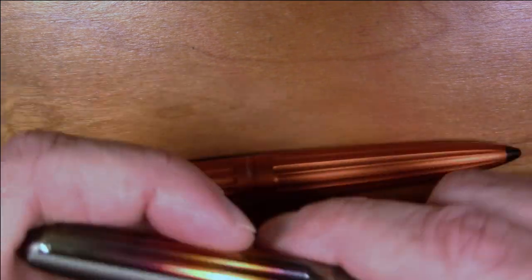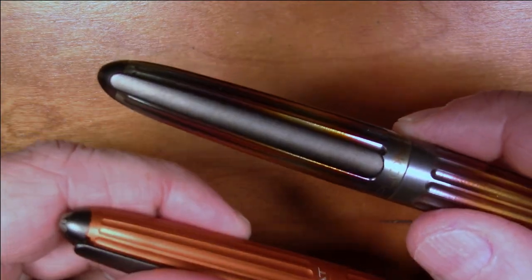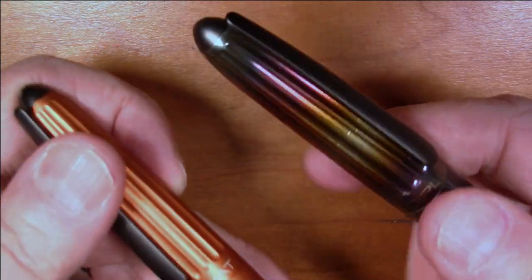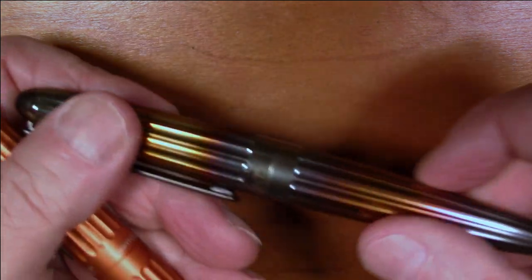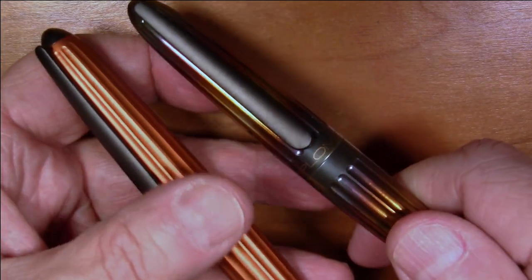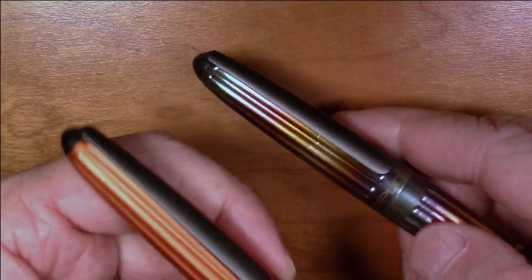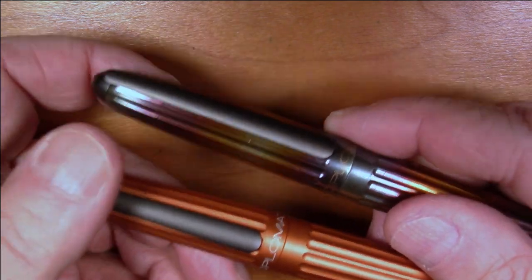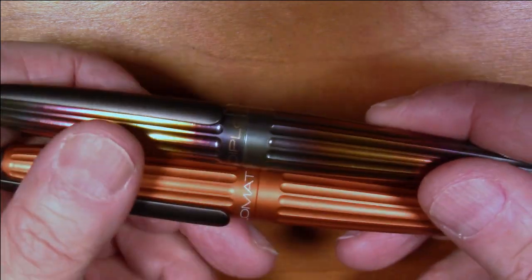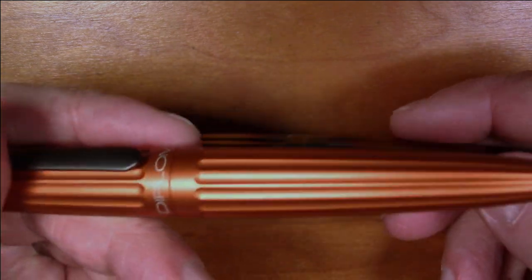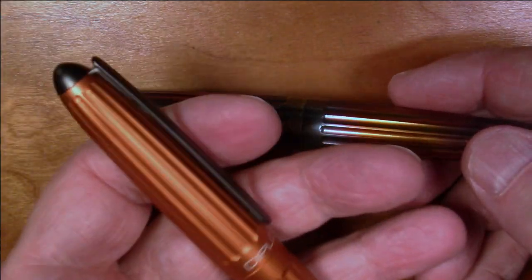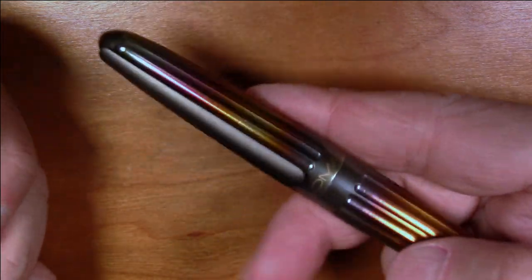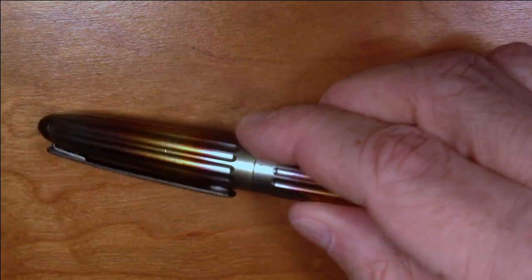Other than the material that the body and cap are made out of and the fact that this has the hand flamed effect, the pens are essentially the same. The writing experience though is quite a bit different because of the weight. This pen at 42 grams, I wouldn't exactly call it a featherweight pen, but you don't feel this as being a particularly hefty pen. This pen has significant heft to it.